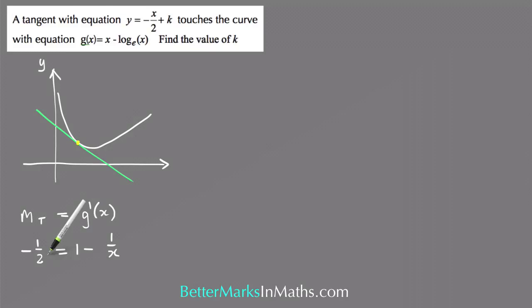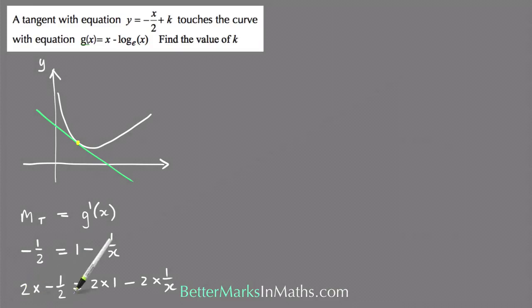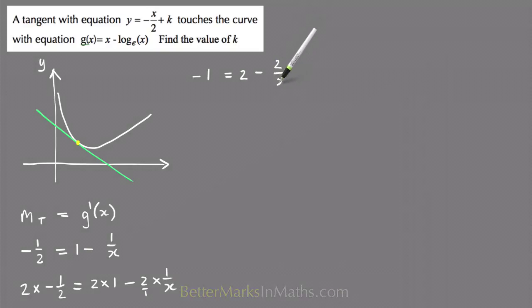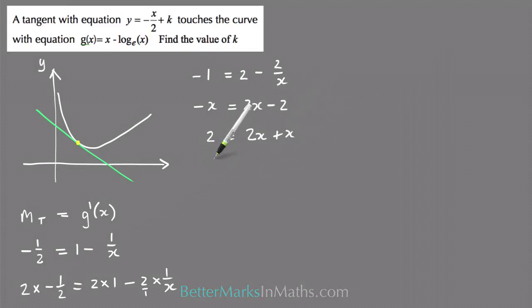Multiplying everything by 2 gives negative 1 equals 2 minus 2 over x. Then multiplying everything by x to clear the denominator gives minus x equals 2x minus 2. Moving terms across, positive 2 equals 2x plus x, so 3x equals 2.